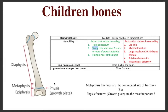Factors that hinder remodeling include: an older child, who will have a lesser remodeling rate than a younger child; a mid-shaft fracture — the farther you get from the growth plate, the less remodeling you get; large angulation of 20 to 30 degrees or more; and also rotational deformities and intra-articular deformities.